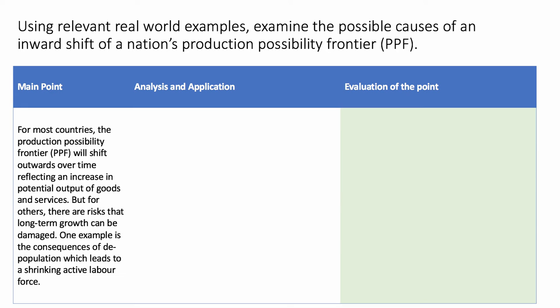For most countries the PPF shifts outwards from year to year as the productive potential of a country increases. But for some nations there are substantial risks to growth, and one of the possible causes of the PPF shifting inwards is depopulation, which can lead to a shrinking in the active labour force.